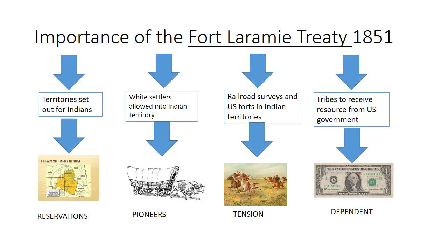First, the importance of the Fort Laramie Treaty of 1851. Basically, this was the first time that territories were set up for Indians, and eventually those territories became the reservations. It also allowed white settlers onto Indian territory, leading to a flood of pioneers crossing the American continent to the west coast. It also allowed railway surveyors and the US Army to build forts on Indian territory, which inevitably led to conflicts and tension.